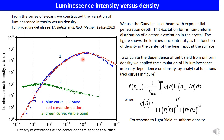All these Z-scan measurements give access to the variation of luminescence intensity versus excitation density. These results are shown in this figure: the blue curve is the experimental data for the excitonic band, and the green curves correspond to the evolution of the visible emission. To analyze these results, we use the Gaussian laser beam with exponential penetration depth, which forms a non-uniform distribution of electronic excitation in the crystal. The figure shows the luminescence intensity as a function of density at the center of the beam spot at the surface.